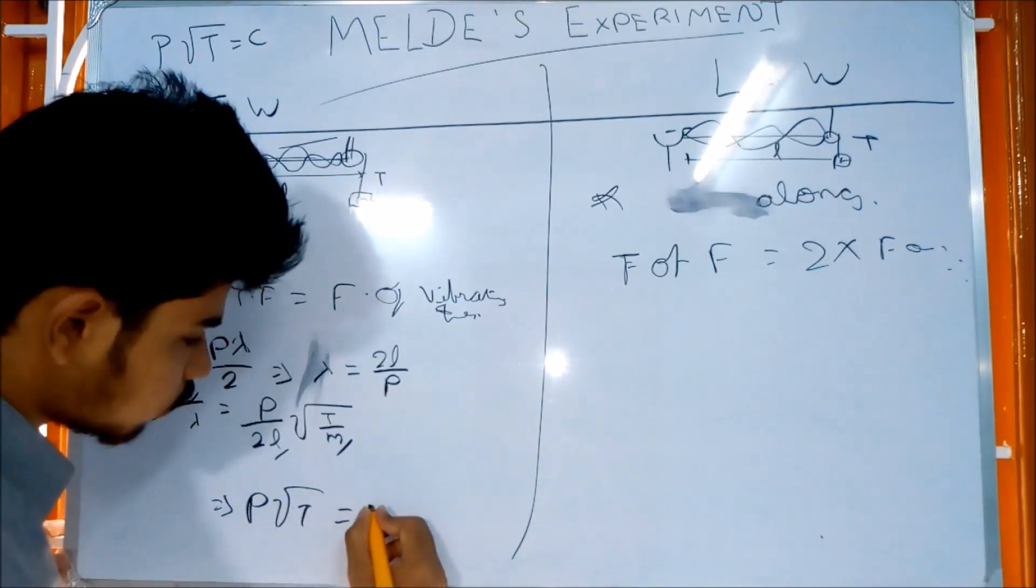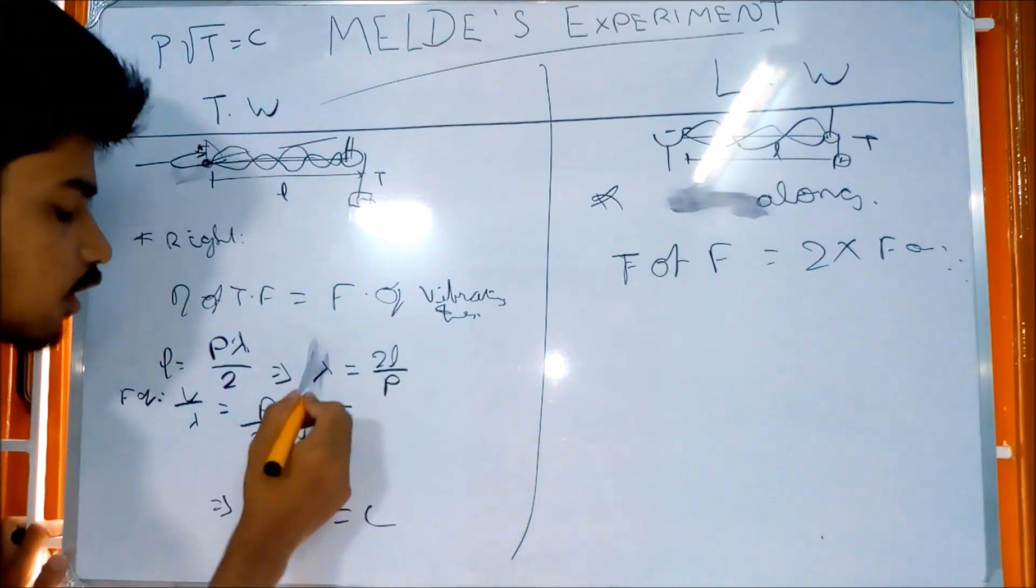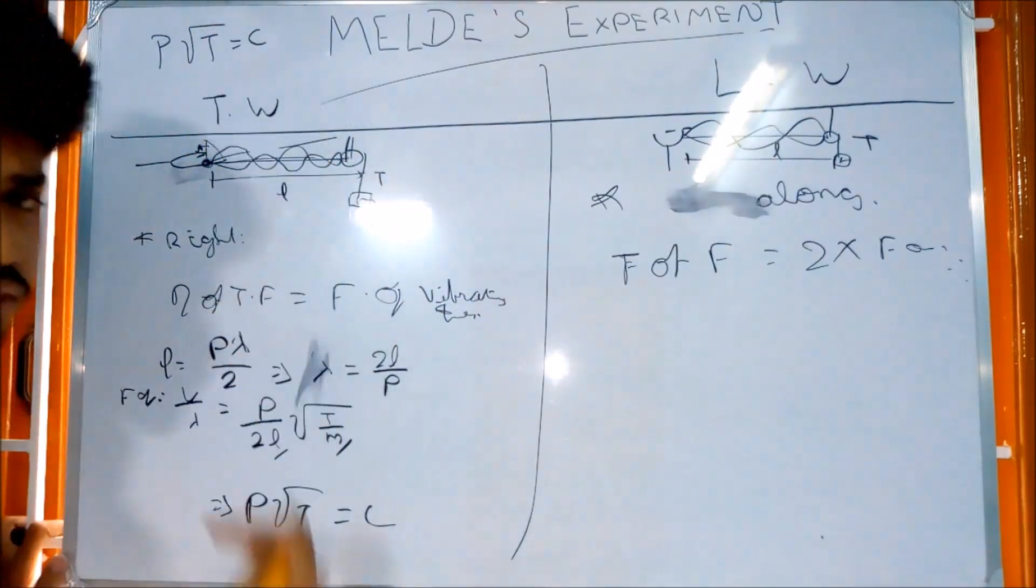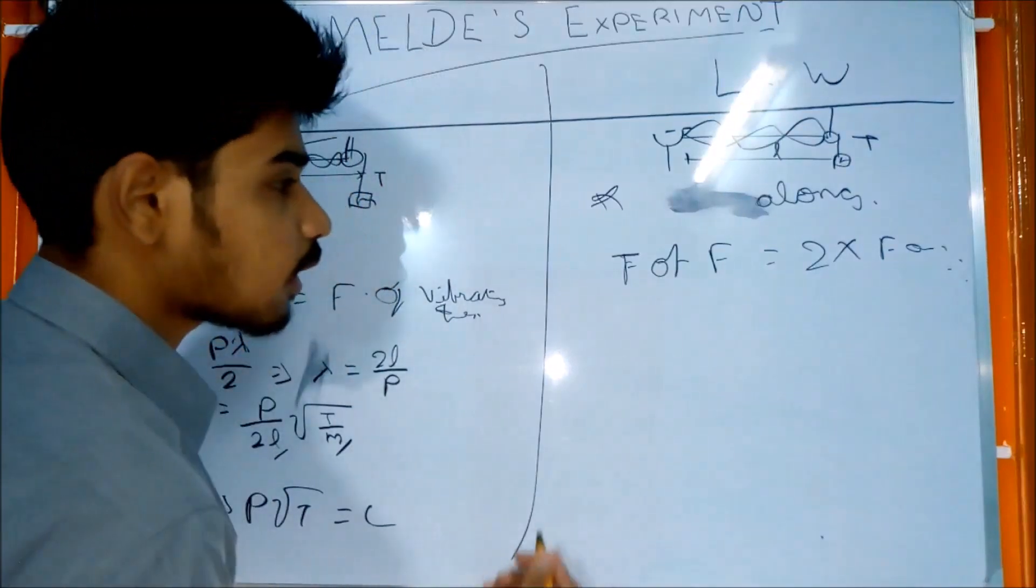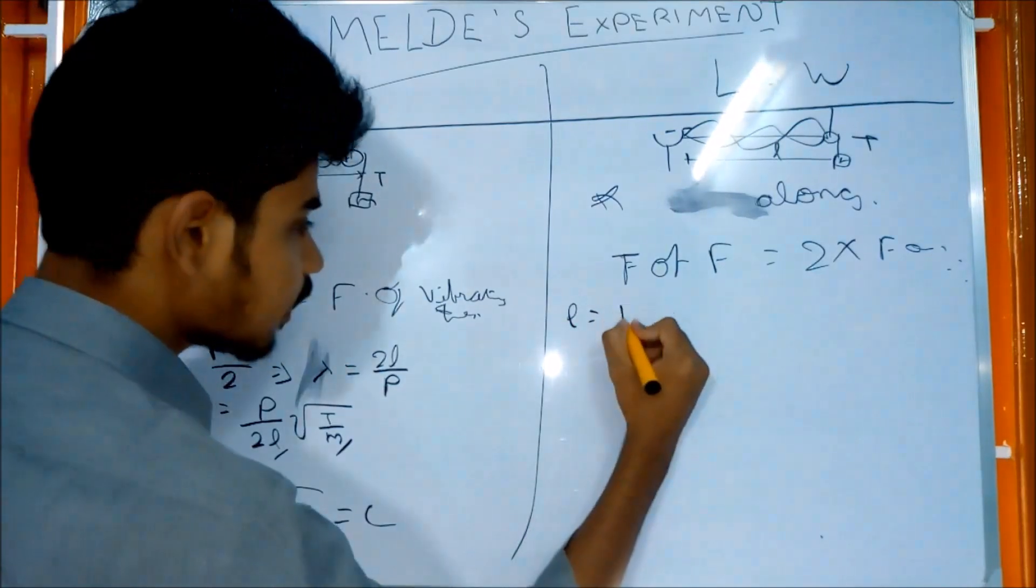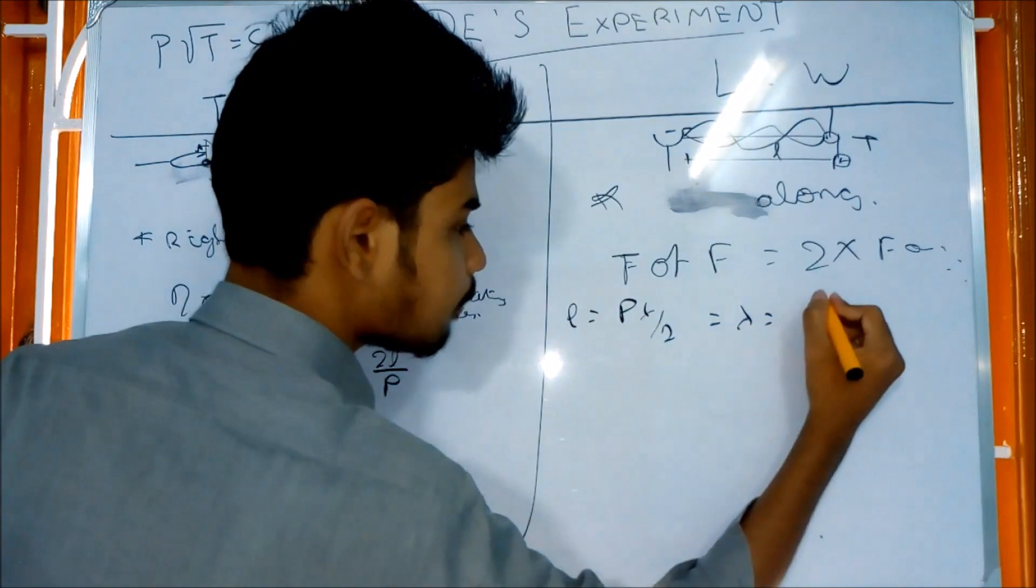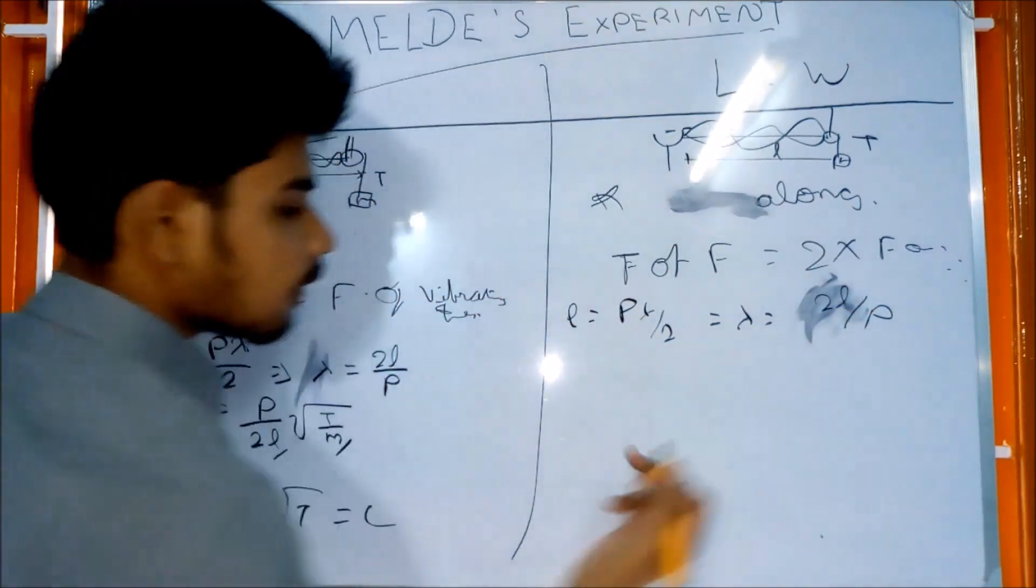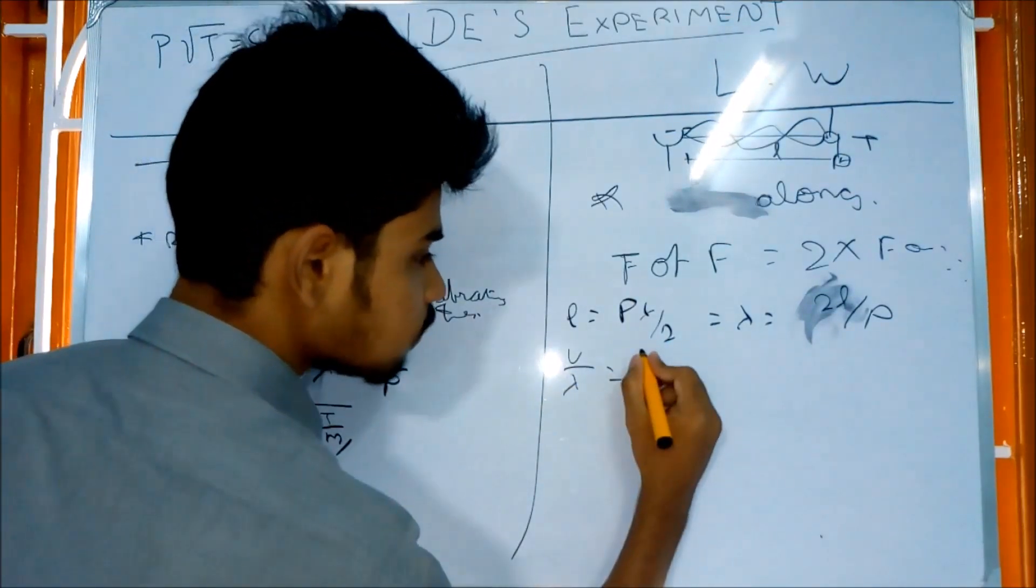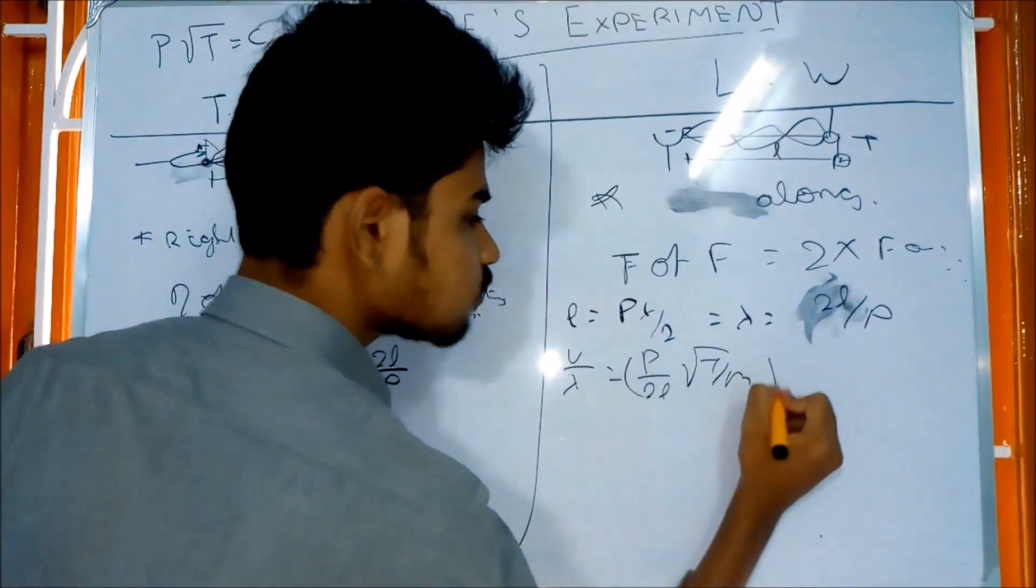Now we are going to prove the final part. Length is P lambda by 2. We can substitute lambda. So 2L by P. Now we substitute into frequency. Lambda equals P by 2L times root T by M.